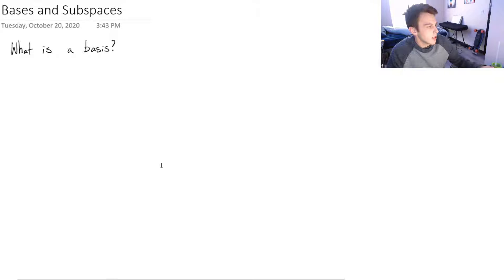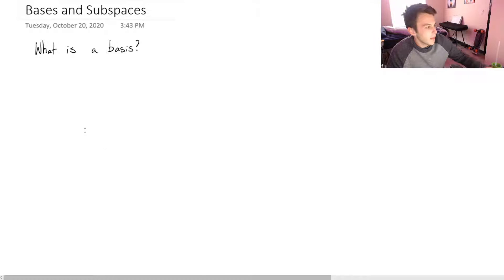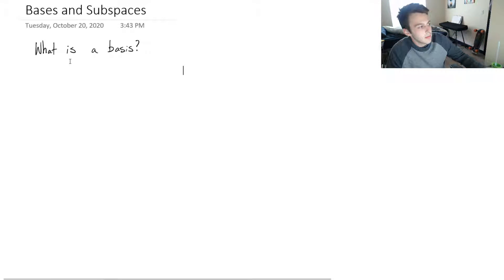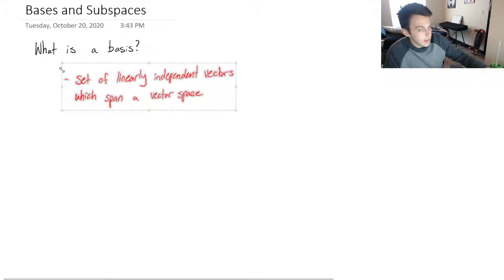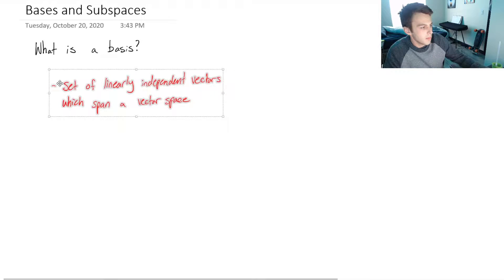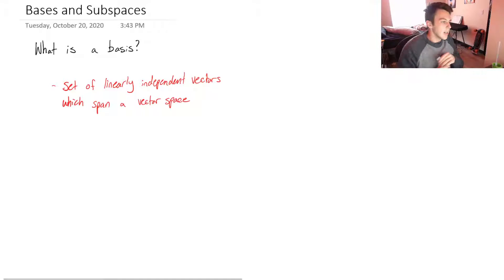So let's take a look. Bases, spelled B-A-S-E-S, is the plural for basis. And what exactly is a basis? The definition, at least in linear algebra, is a set of linearly independent vectors which span a vector space.